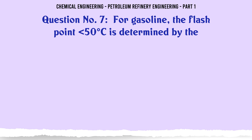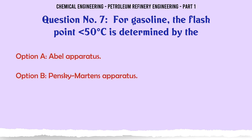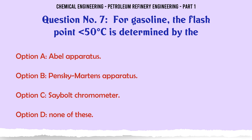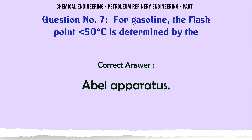For gasoline, the flash point below 50 degrees Celsius is determined by the: A. Abel apparatus, B. Pensky-Martens apparatus, C. Saybolt chromometer, D. None of these. The correct answer is Abel apparatus.